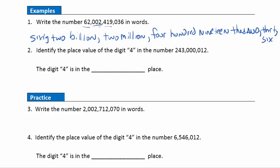Example two: identify the place value of the digit four in this number. Here's our digit four. We go to the ones period, thousands period, and now we're in the millions period. We are in the ones place and the tens place of the millions period. So that is the ten millions place value.